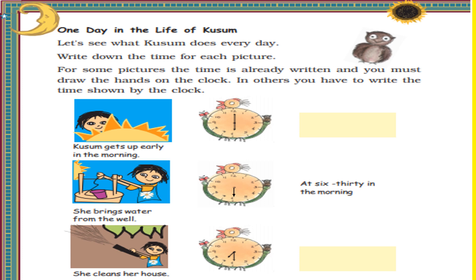Look at the first picture. Kusum gets up early in the morning and the time on the clock is 6 o'clock. The minutes hand is at 12 and the hour hand is at 6, so the time is 6 o'clock in the morning.